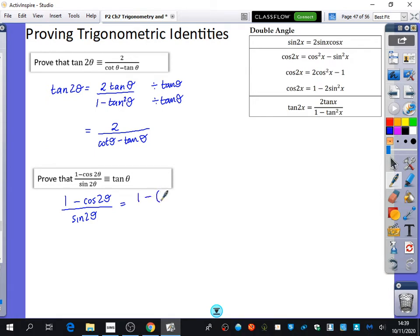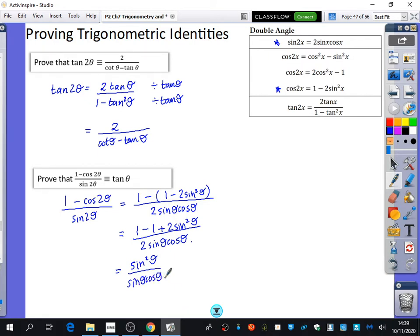So I'm going to replace cos 2θ with this one here, 1 minus 2 sine squared θ. And sine 2θ we know is 2 sine θ cos θ. Again, that's just up here. Expanding the brackets on the top, 1 minus 1 plus 2 sine squared θ divided by 2 sine θ cos θ. So the 1s cancel, the 2s cancel. So you just get sine squared θ divided by sine θ cos θ. Anything else cancels? Yeah, the sine squared and the sine θ. So I can get rid of this sine θ and the squared. So I just have sine θ over cos θ, which is tan θ.